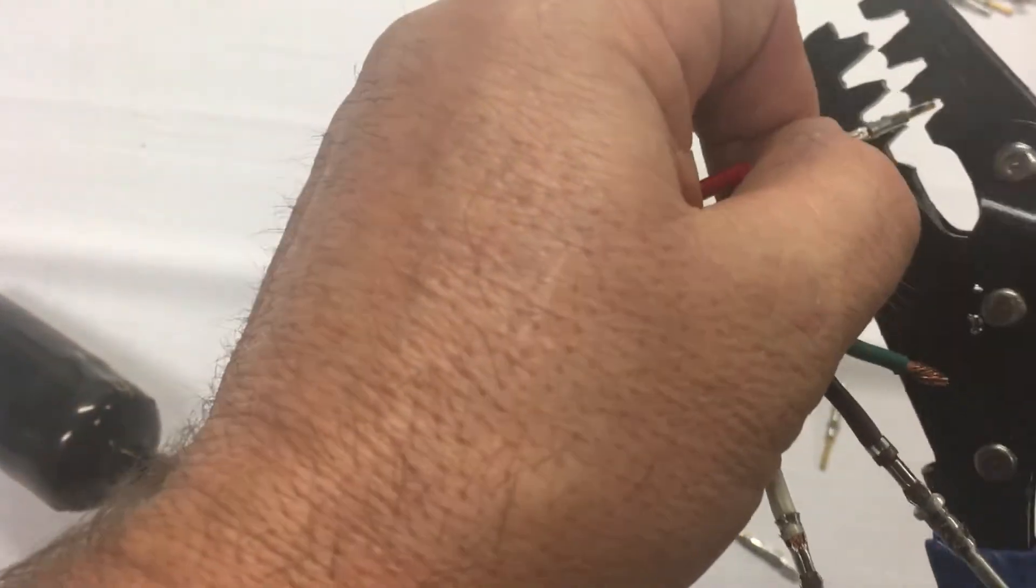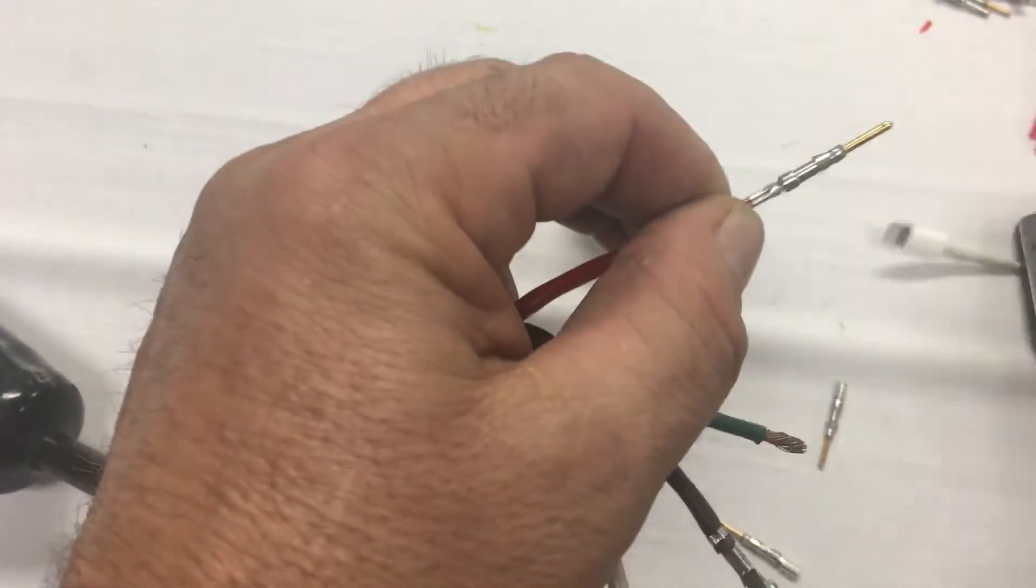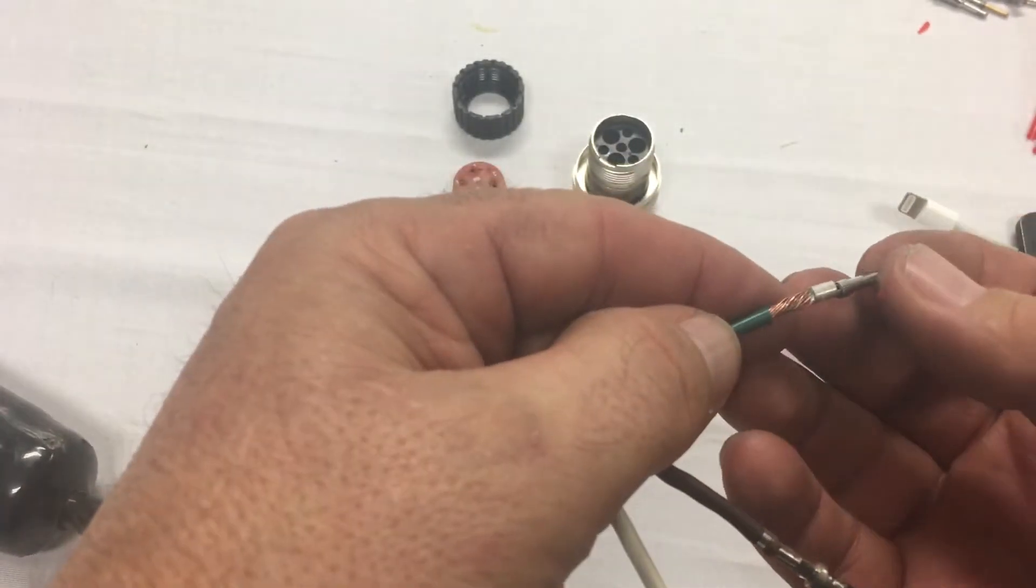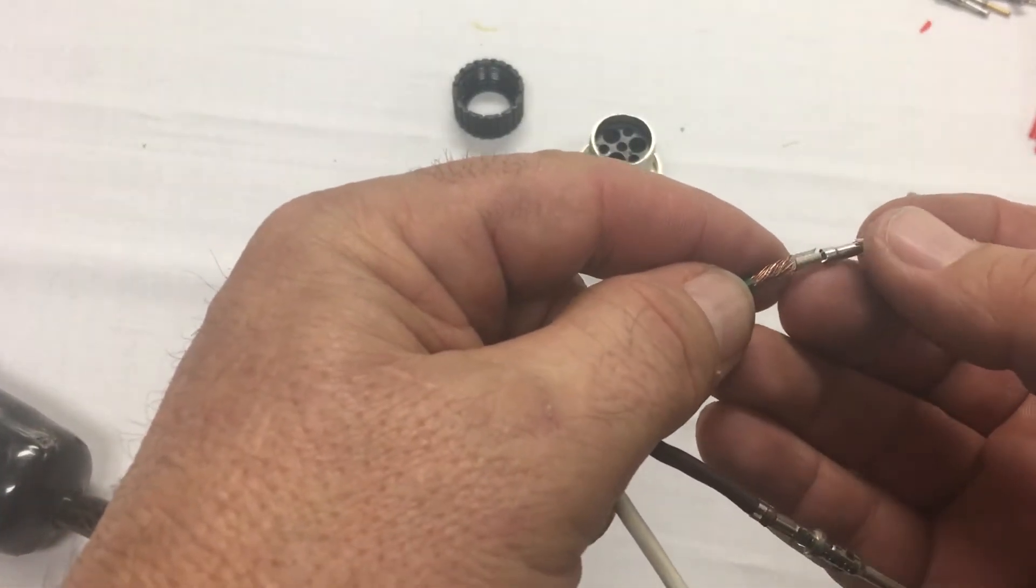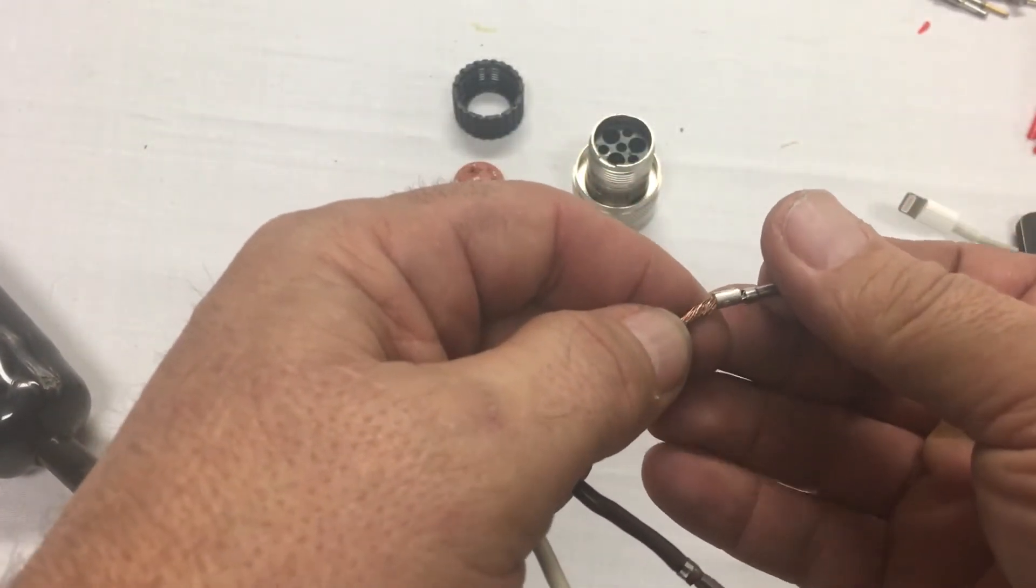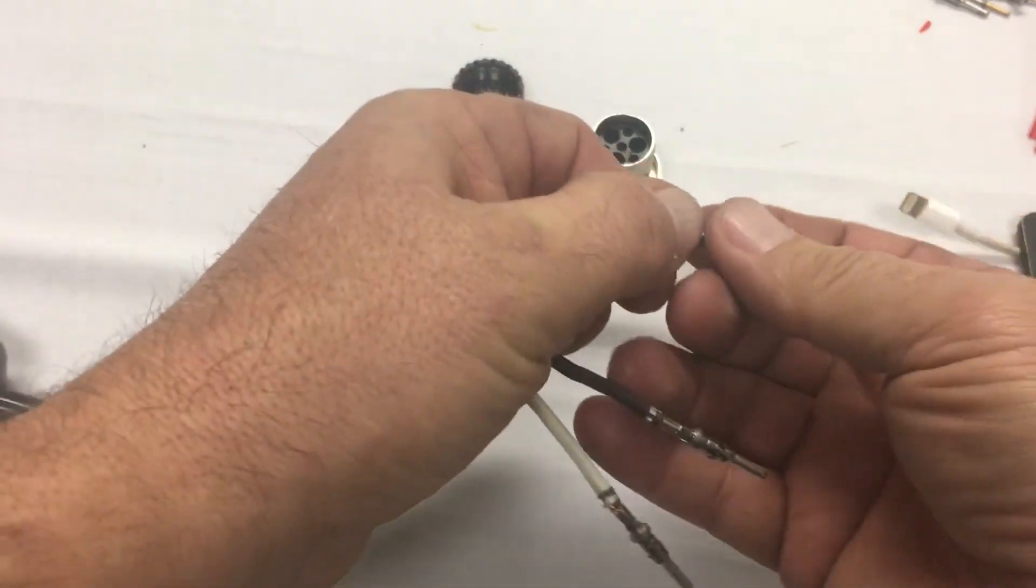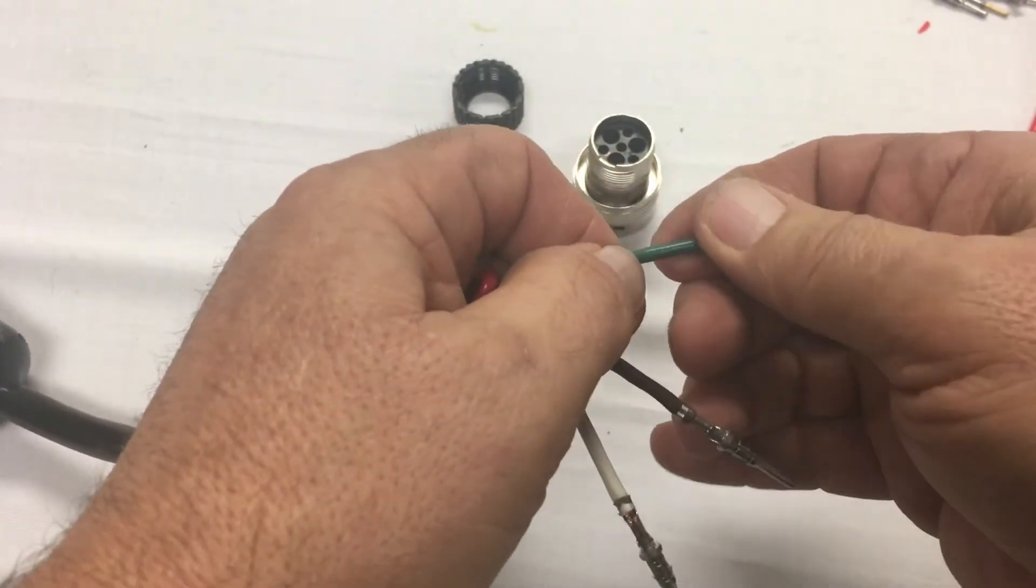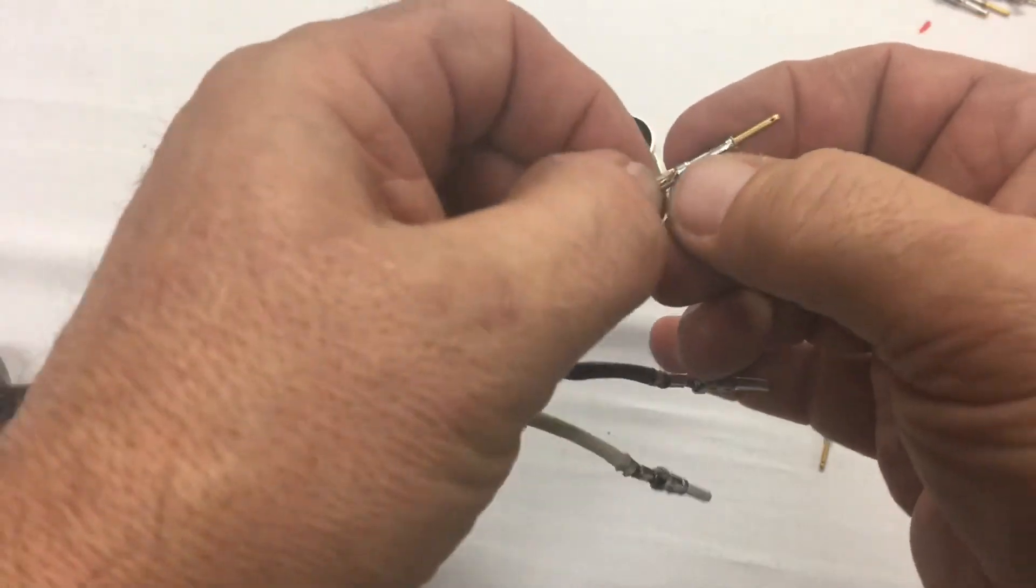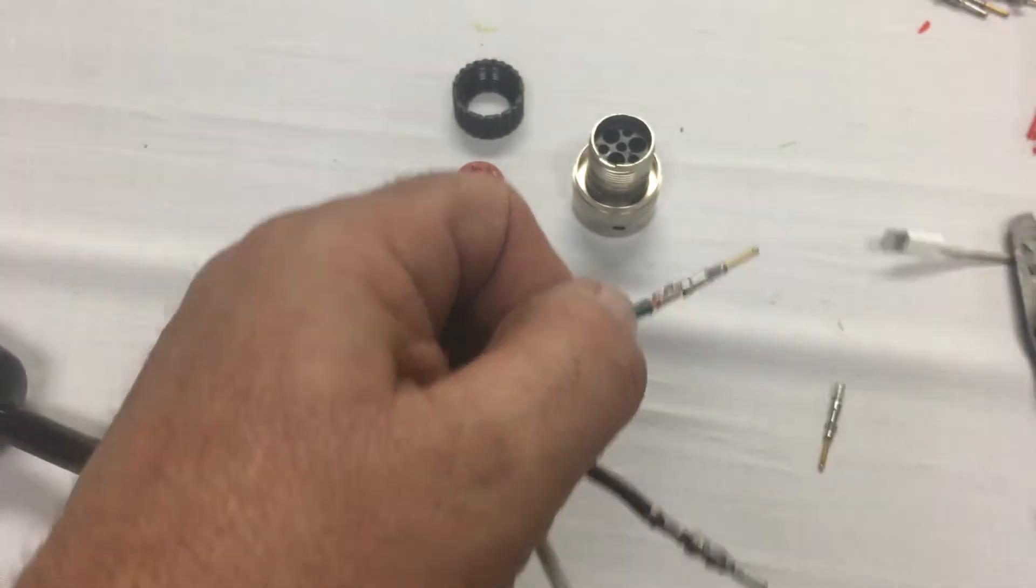And this one gets the D crimp as well. And then I think I'm going to finish these off with an E. Nice and tight. Okay, so I'm going to do this one.